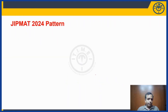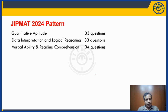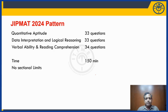Let's start by looking at the GIPMAT pattern. Thankfully, there were no surprises compared to last year. The pattern was exactly the same: a total of 100 questions — 33 from Quantitative Aptitude, 33 from the DILR section (Data Interpretation and Logical Reasoning), and 34 from the VARC section (Verbal Ability and Reading Comprehension). The overall time limit was two and a half hours — 150 minutes for 100 questions — making it a relatively comfortable exam in terms of time per question.